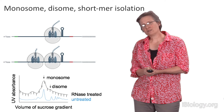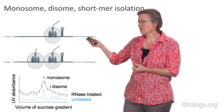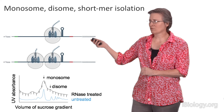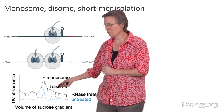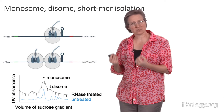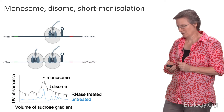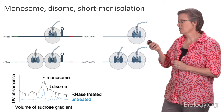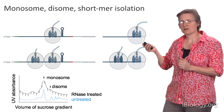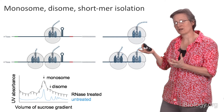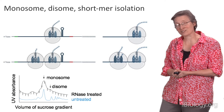We added a refinement: reasoning that large impediments might cause not one but two ribosomes to stack, we isolated a disome peak in addition to monosomes. We were also generous in cutting fragments from the gel, reasoning that short messenger RNA footprints — around 16 nucleotides — might be preferred substrates for DOM34, since we know DOM34 prefers short messenger RNA templates based on our biochemistry. So we isolated shorter and longer footprints as well.